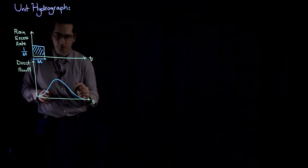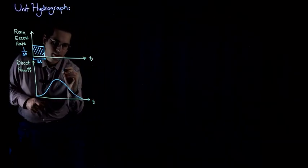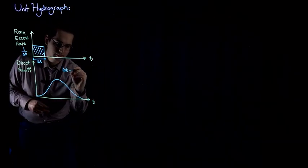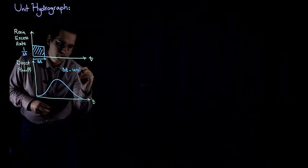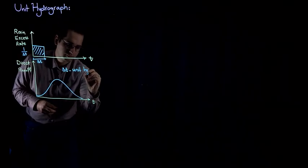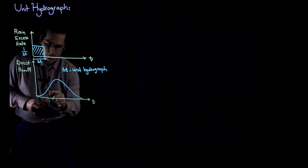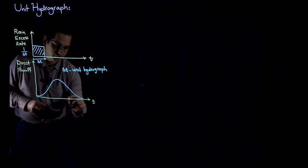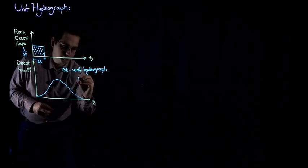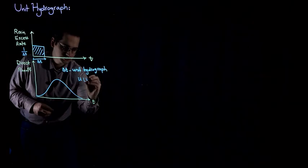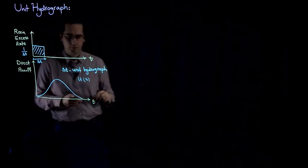We call this hydrograph a delta T unit hydrograph. And because the ordinates of this hydrograph are a function of T, we show it by U(T).